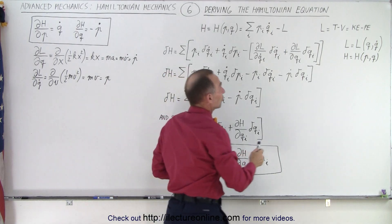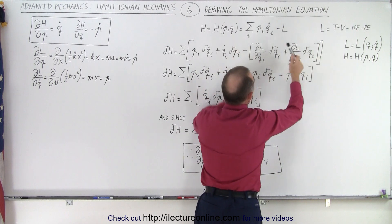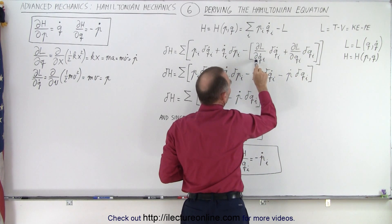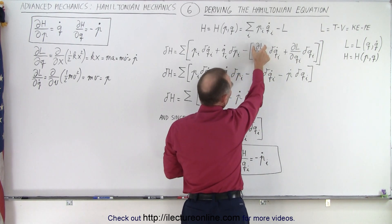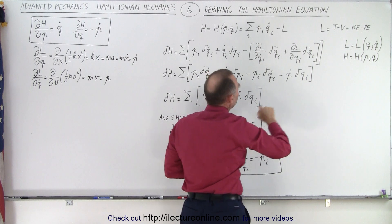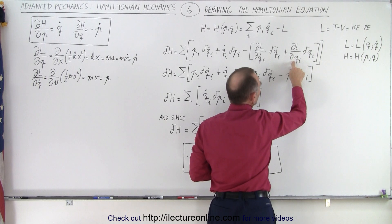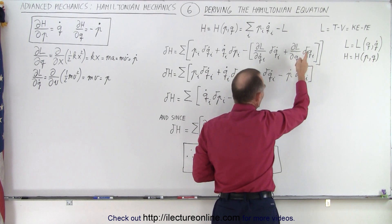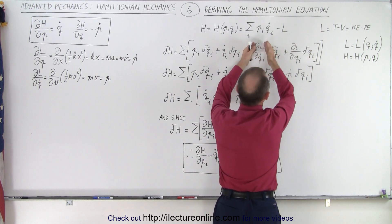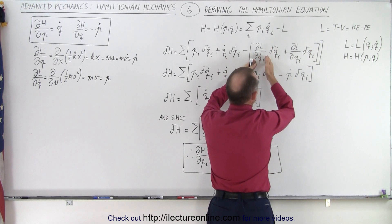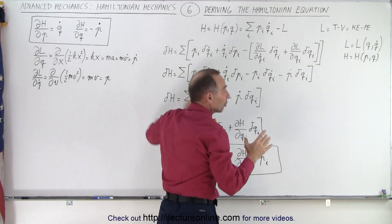Since the Lagrangian is a function of q and q-dot, we take the negative of its expansion: that's the change in the Lagrangian with respect to q-dot times the differential dq-dot, plus the change in the Lagrangian with respect to q times dq. When the delta-q terms cancel out, you simply end up with the change of the Lagrangian relative to q-dot and the change in the Lagrangian relative to q — giving us the differentials, not the derivatives.